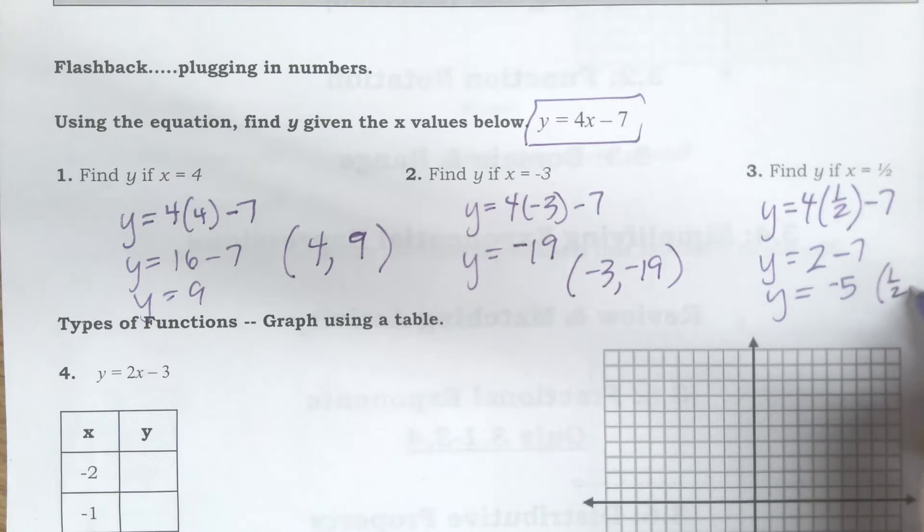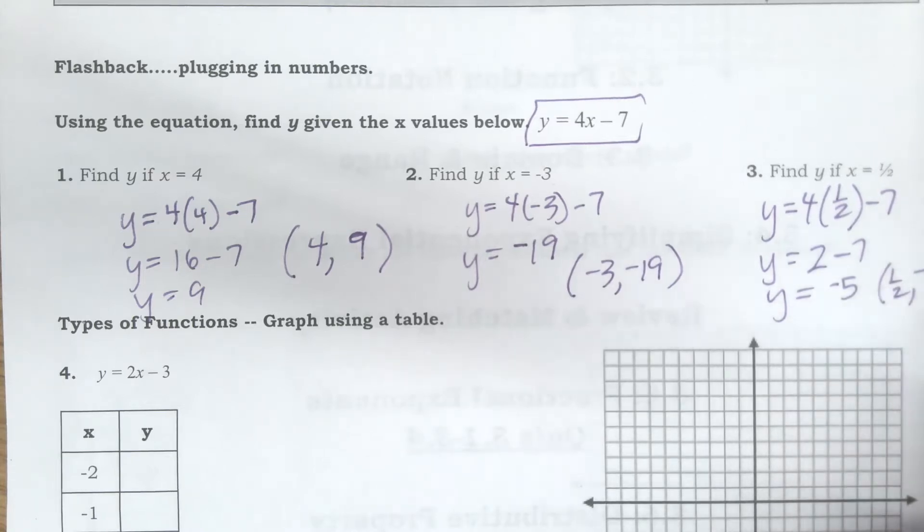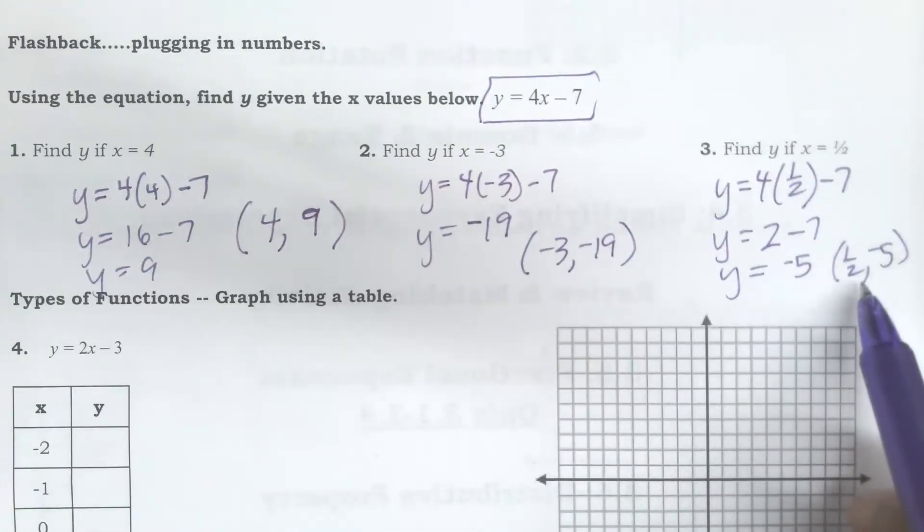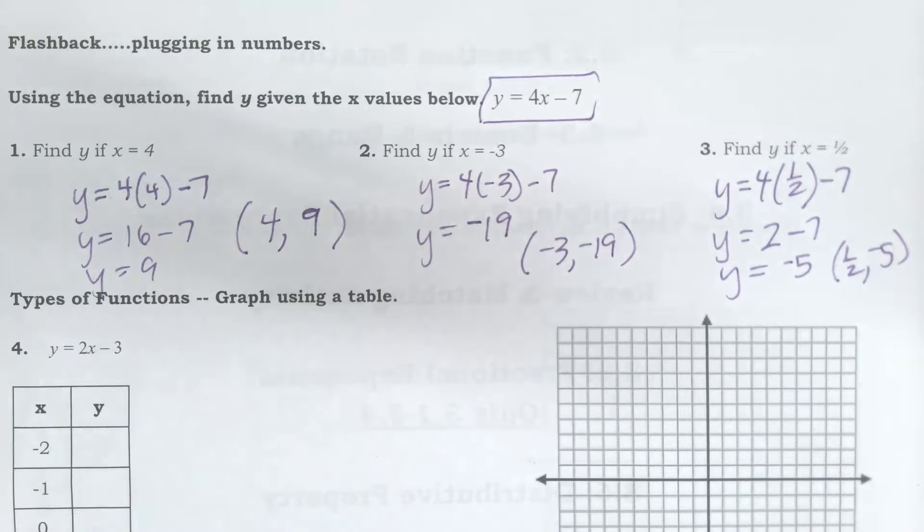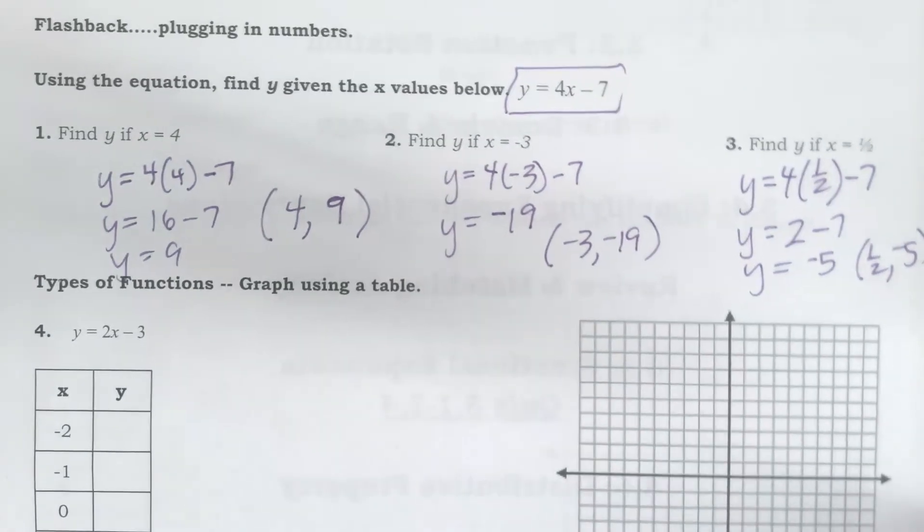And we already graphed points that were fractions or decimals when we did that Thanksgiving pumpkin, so that's not something you haven't ever seen before. I would graph this as 0.5 between 1 and 2 and then go down 5 from there to put my point.